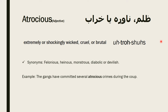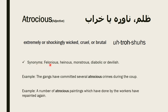The pronunciation of the word is 'atrocious.' Synonyms of atrocious are monstrous, felonious, and heinous. Heinous means monstrous, symbolic, or devilish. For example: the gangs have committed several atrocious crimes during the coup.